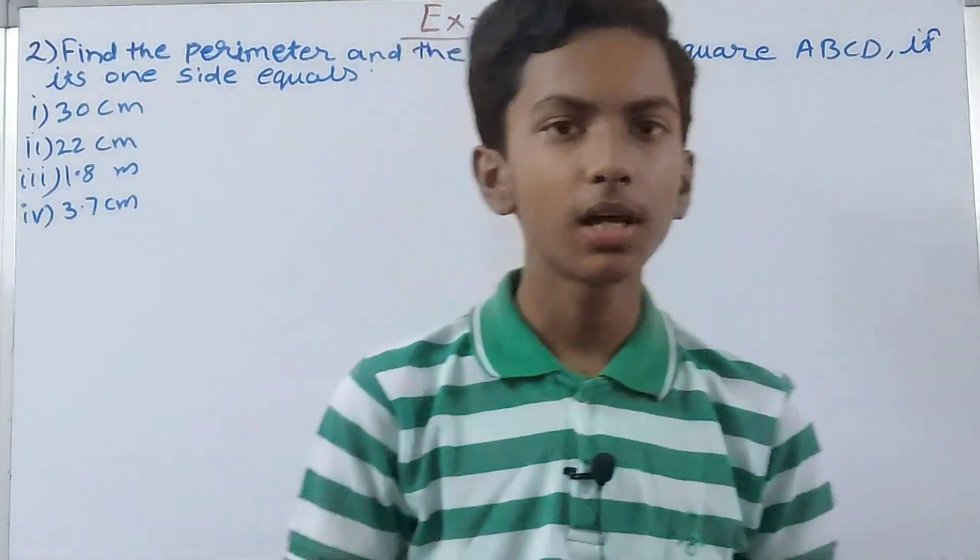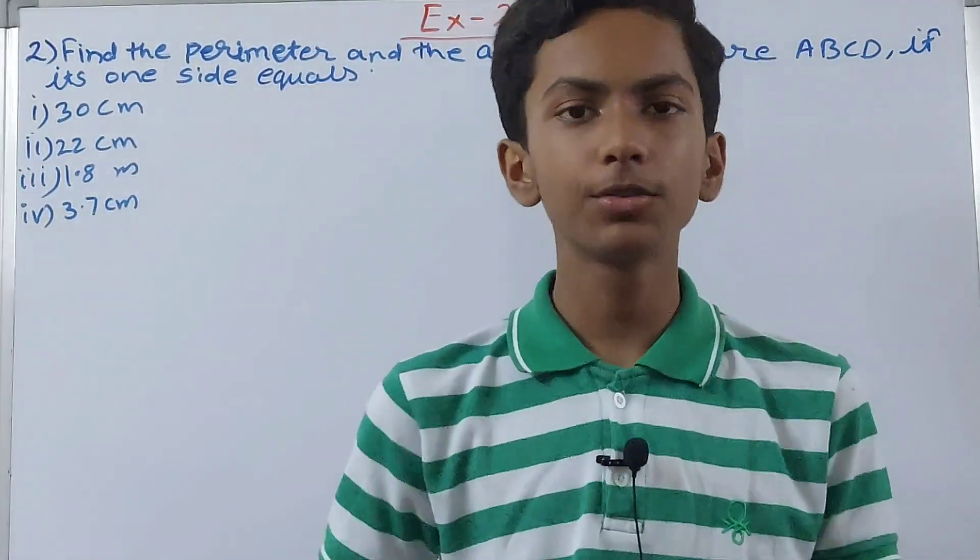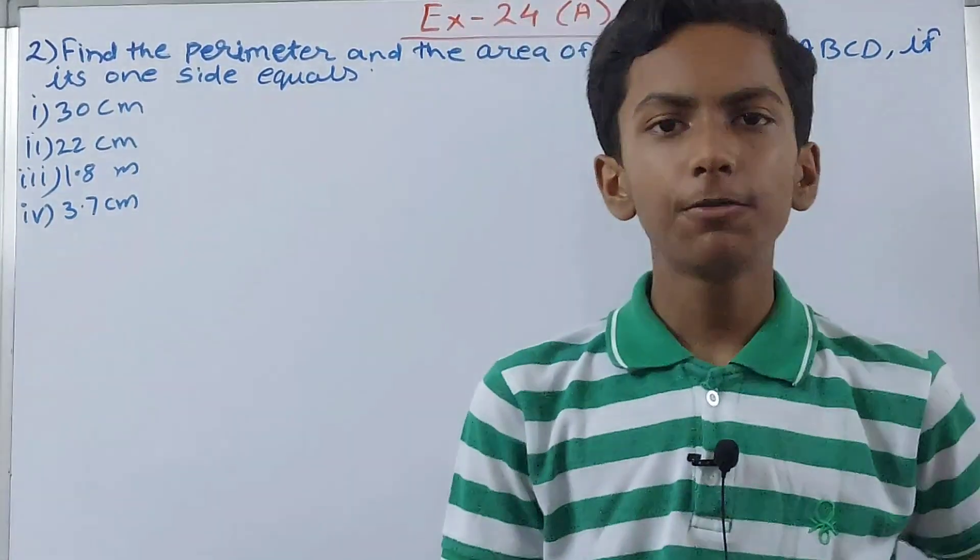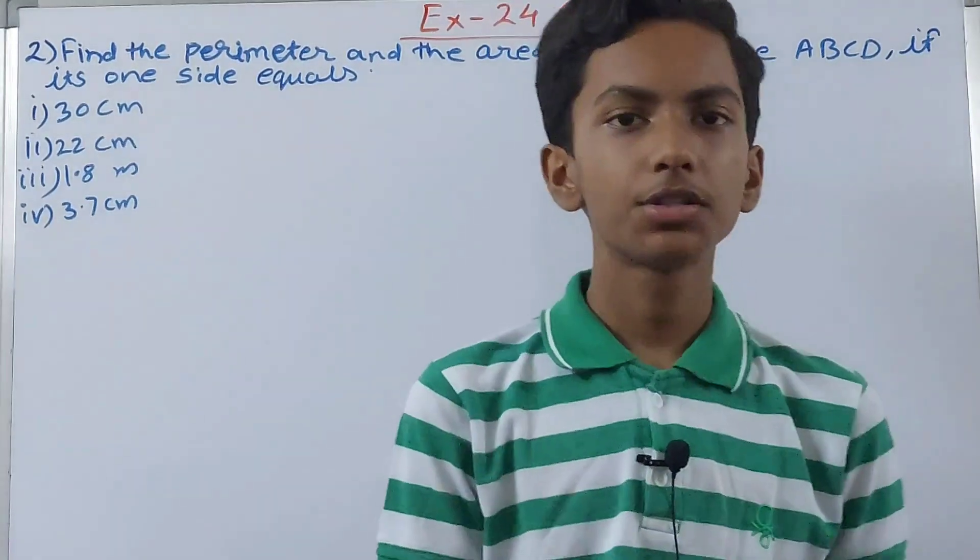Hello friends, welcome back to my YouTube channel, Lockyer Learning. In this video we are going to solve ICSE Mathematics class 7th, chapter 24, area and perimeter, exercise 24A, question number 2.